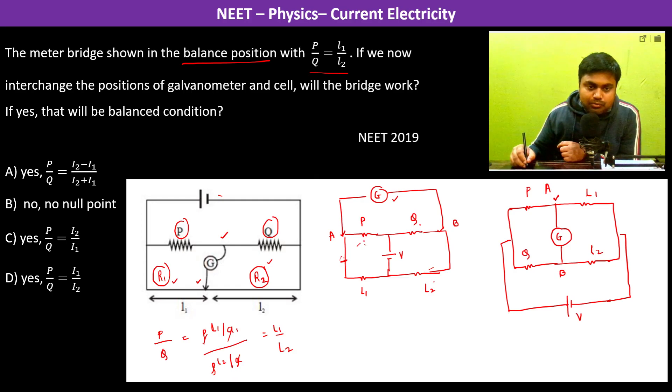As P by Q was equal to L1 by L2, and here also you see, since P by Q is equal to L1 by L2, in this situation we take L1 this side, Q this side. Therefore, P upon L1 is equal to Q upon L2.